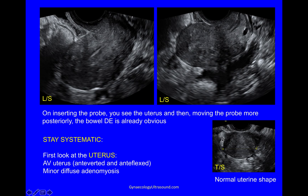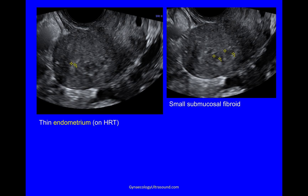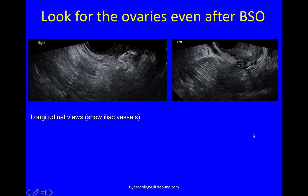Looking at the transverse plane, the uterus is a normal shape, which I judge by the shape of the endometrial cavity. Then looking at the endometrium, at the endometrial thickness — I will have had better views throughout but this is where I'm measuring the endometrium. It's nice and thin on her HRT, and here there was a small submucosal fibroid. Even though I knew she'd had a BSO, I still look for the ovaries in the longitudinal view because that shows you the iliac vessels, and in both annexae you can see there's no ovary.